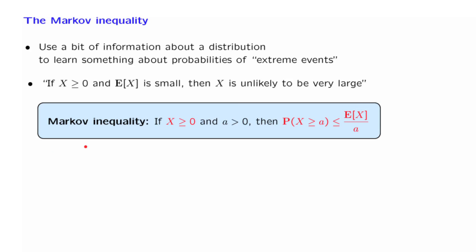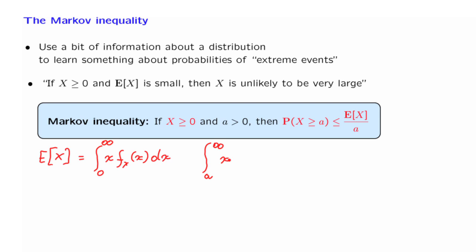Let us now proceed with the derivation. Let's start with the formula for the expected value of X. Just to keep the argument concrete, let us assume that the random variable is continuous, so that the expected value is given by an integral. The argument would be exactly the same in the discrete case, but there we would use a sum. Since the random variable is non-negative, this integral only ranges from 0 to infinity. Now, we're interested in values of X larger than or equal to a, and that tempts us to consider just the integral from a to infinity of the same quantity. Since we're integrating a non-negative quantity over a smaller range, the resulting integral will be less than or equal to the full integral.